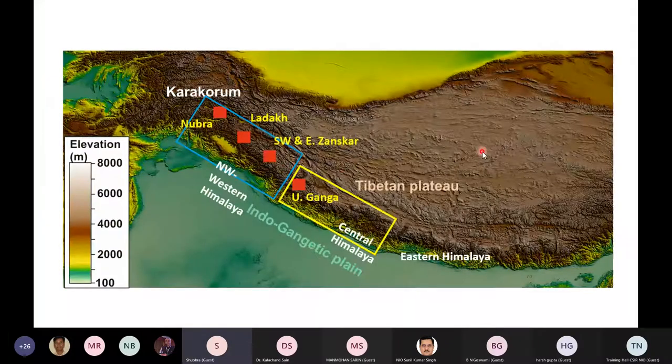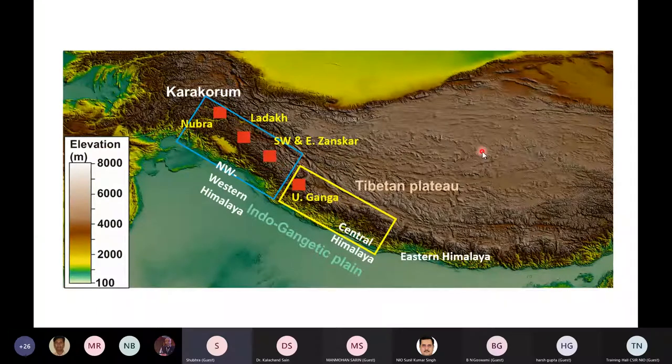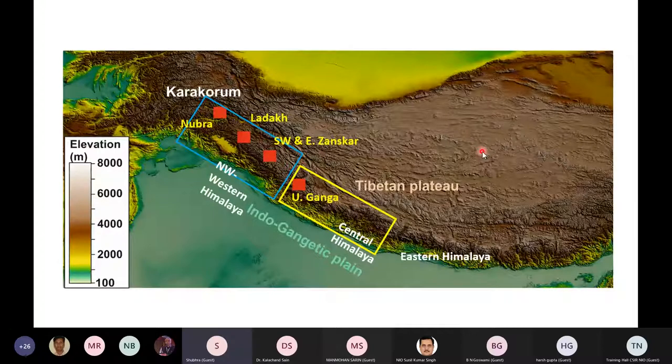And we wanted to understand how the glacier response is along this precipitation gradient and therefore we selected a few valleys right across from Karakoram, Ladakh, Zanskar and upper Ganga valley. So very quickly I will be going through some of the key photographs and evidence from these valleys before I summarize the major inferences.